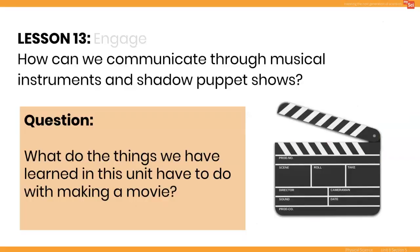In the Engage portion of this lesson, you'll ask students: do you have a favorite movie, TV show, play, or musical? What do the things that we've learned in this unit have to do with making a movie? You'll take student responses and then say: today we get to create our final shadow puppet show that includes both sounds from our musical instruments and light for our shadow puppets.